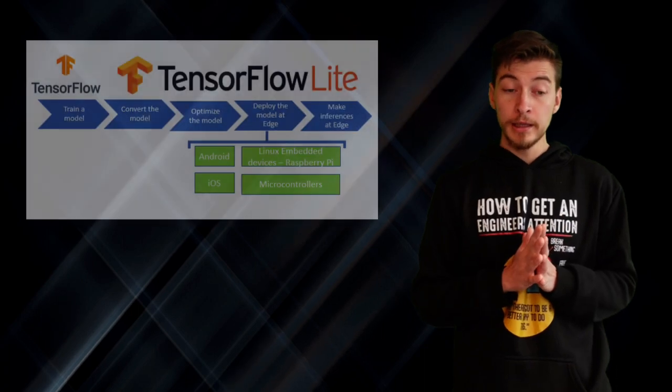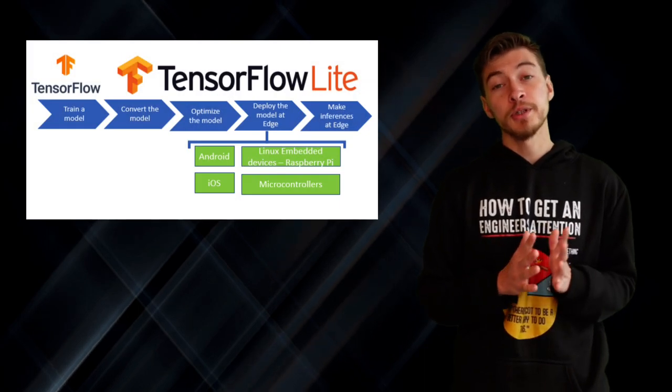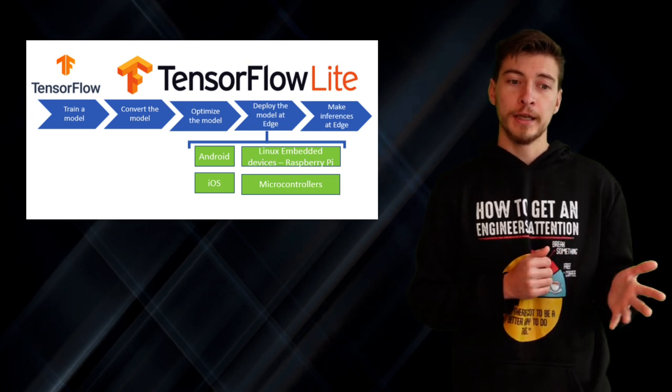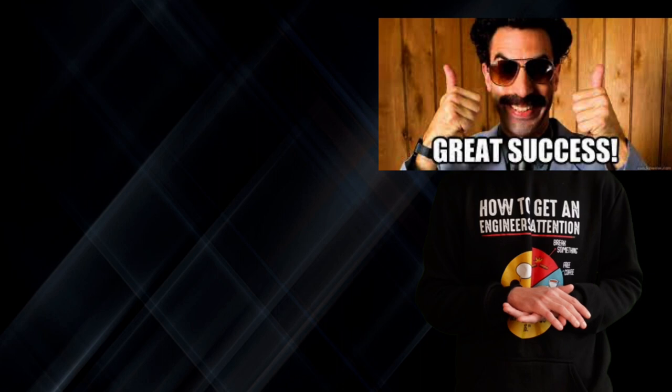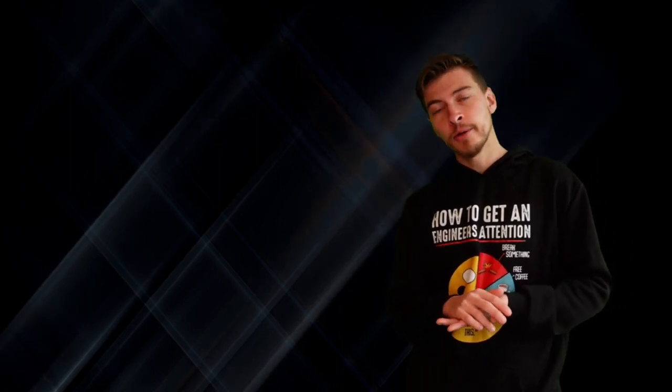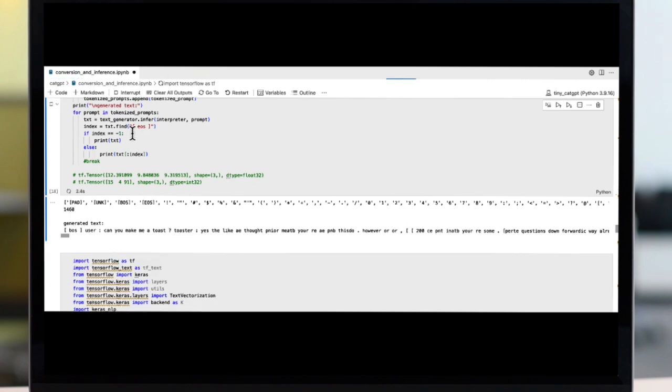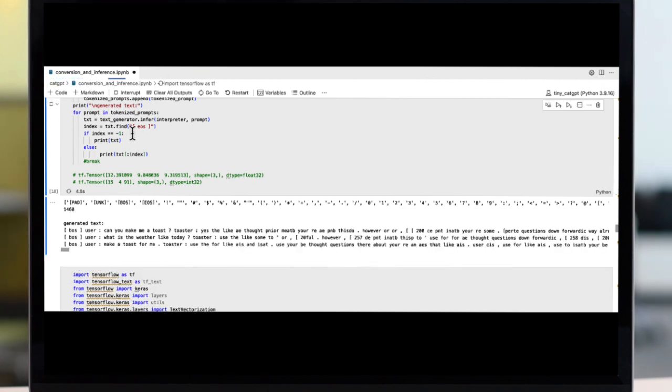After the models are trained, it's time to convert them to TensorFlow Lite format for more efficient standalone inference on our target device. While converting to float32, the TF Lite model was successful from the get-go. Quantizing the models to integer 8, even without quantizing inputs and outputs of the model, it completely trashed the performance. You can see the results here. Fun.